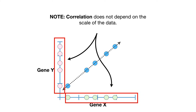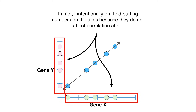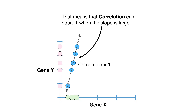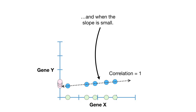Note: correlation does not depend on the scale of the data. I intentionally omitted putting numbers on the axes because they do not affect correlation at all. Regardless of the scale of the data, correlation equals 1 when a straight line with a positive slope can go through all of the data. That means correlation can equal 1 when the slope is large and when the slope is small.